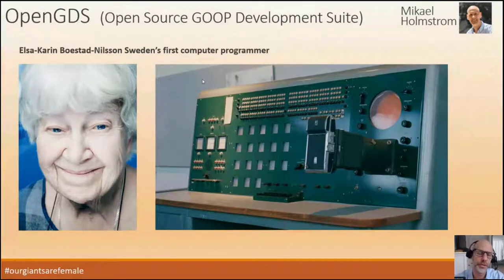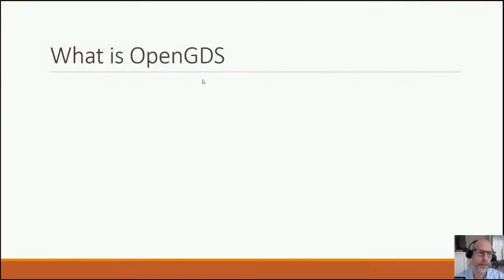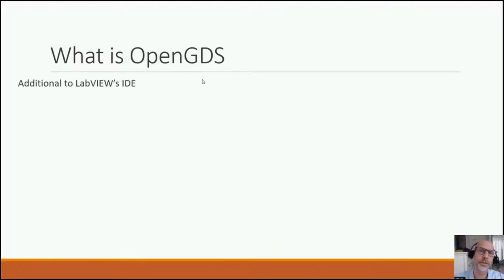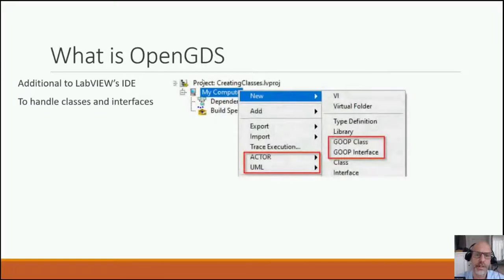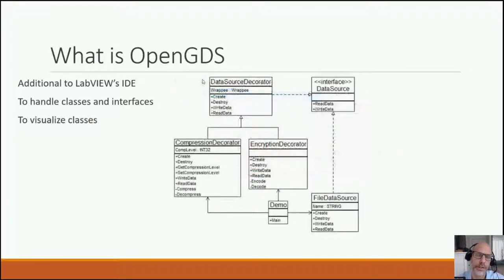In the beginning we created different tools to help us use classes in LabVIEW before native support. So what is OpenGDS? It's an addition to your LabVIEW IDE that helps you handle classes and interfaces more productively, and also has a feature to visualize classes using UML diagrams.